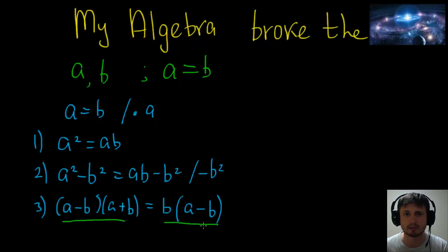All right, let's continue. So step number four, well, why don't we just get rid of this and get rid of this by basically dividing both sides by a minus b? We can do this, right? I think so. And so what we're going to get is we're going to get a plus b equals b. It looks right.